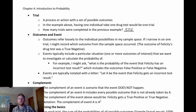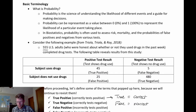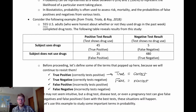Outcomes refer to these individual possibilities in the sample space. Getting a positive test result is one particular outcome, or having five keys is a possible outcome. An event is a set of one or more possible outcomes that we have an interest in. For example, the event of getting a correct test result includes two different outcomes: the true positives and the true negatives. So those two different outcomes make up the event of getting a correct test result.